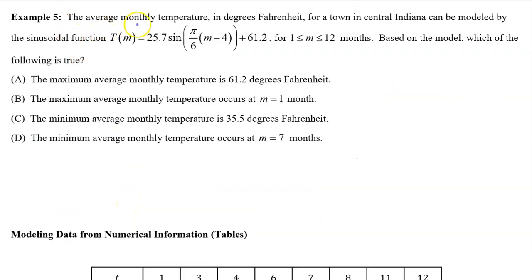Example 5: The average monthly temperature in degrees Fahrenheit for a town in central Indiana can be modeled by the sinusoidal function T(m), which equals, well, all of this, for the interval from 1 to 12 months. Based on the model, which of the following is true? Option A says the maximum average monthly temperature is 61.2 degrees Fahrenheit. This cannot be true because we see that the middle value is 61.2. So the maximum value has to be 25.7 degrees above this. So A cannot be the answer.